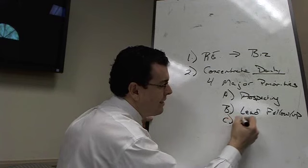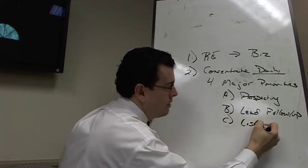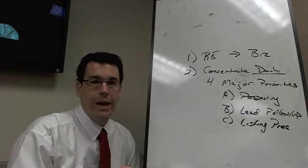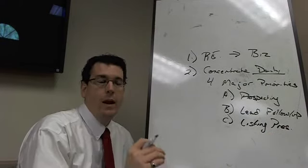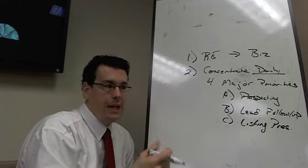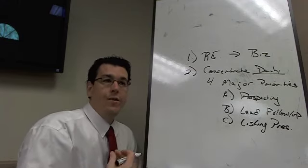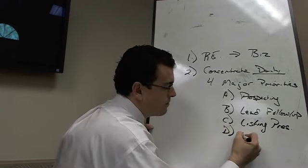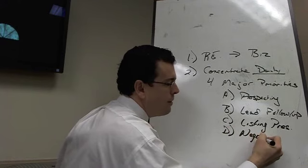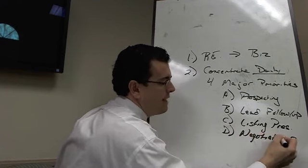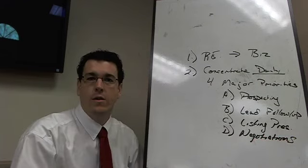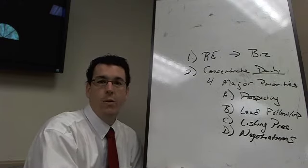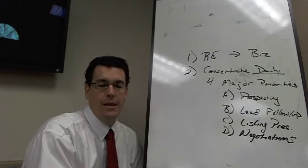Third, C, listing presentations. If you want to get paid, you've got to be in front of people every day. There's just no two ways about it. Unless people are lining up at your door to give you money, you have got to go out to them and meet them. And then D, negotiations. That's where you get paid. You've got to get properties under contract. Buyers and sellers need to have their homes sold. You need to get them under contract and start working with them to get a good price that they want.